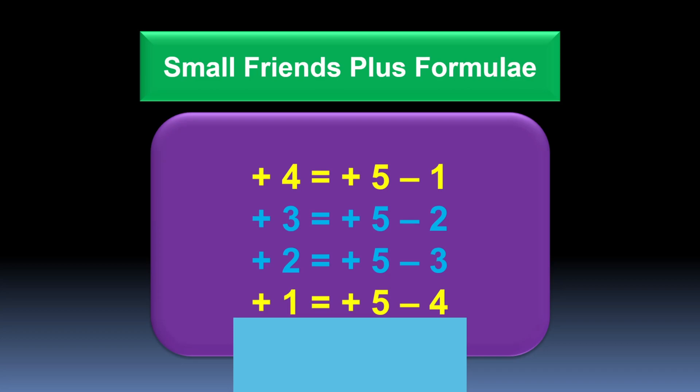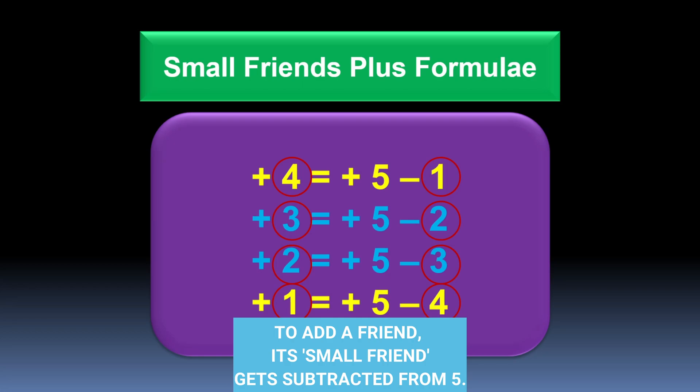Let's see how the small friends are involved in these formulae. In the first formula, the two small friends are 4 and 1. In the second formula, 3 and 2 are the small friends. In the third formula, 2 and 3 are the small friends. And in the last formula, 1 and 4 are the small friends. So these small friends help us understand and learn the formulae of small friends plus.